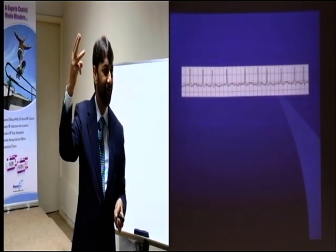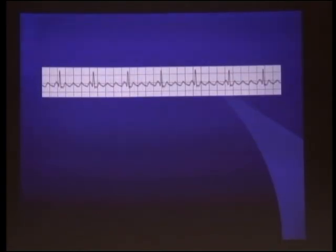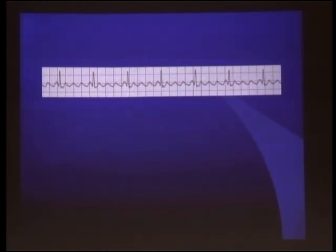Atrial flutter: there are more than one P between each RR — you see four P waves between RR intervals. That is the differentiating point: multiple P waves at a regular rate. QRS is narrow. So this is atrial flutter with 4:1 or 5:1 conduction. Everything moves around those five points: rate, rhythm, P waves, PR interval, QRS duration.